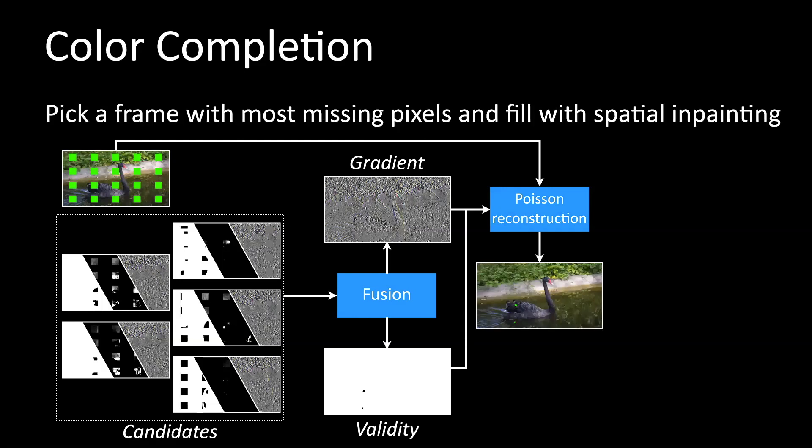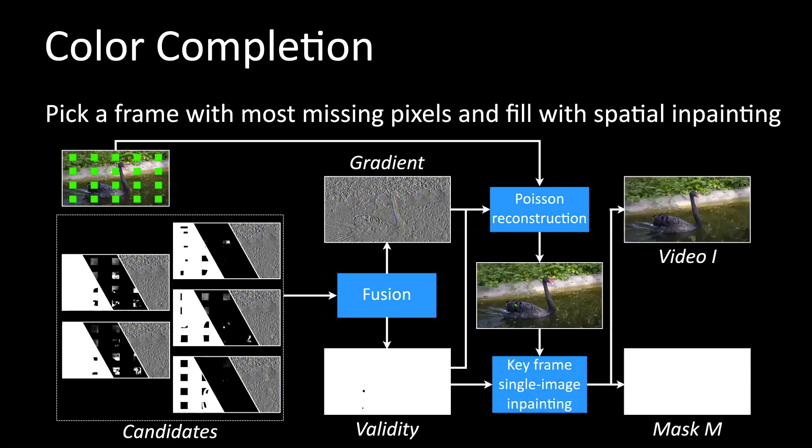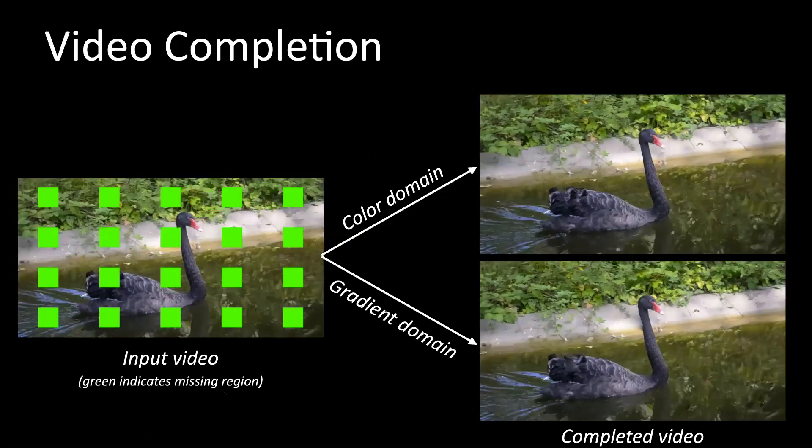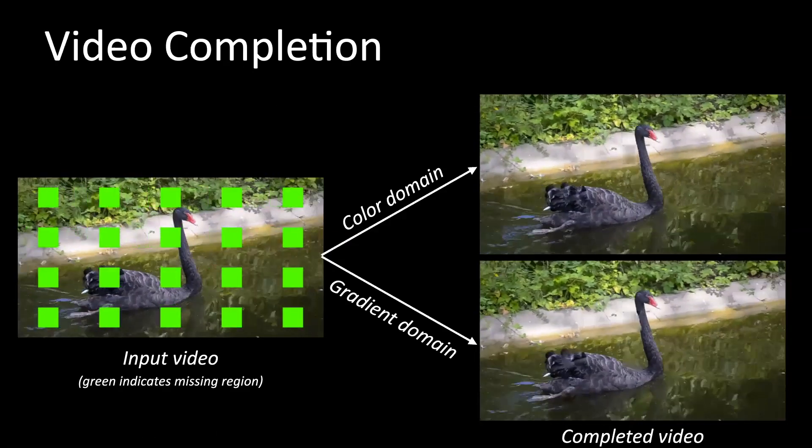We reconstruct the image by Poisson reconstruction. We pick a frame with the most missing pixels and inpaint the frame with spatial inpainting. The result will be passed into the next iteration until there are no missing pixels. By operating in the gradient domain, we obtain seamless results.